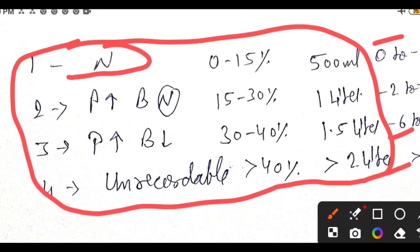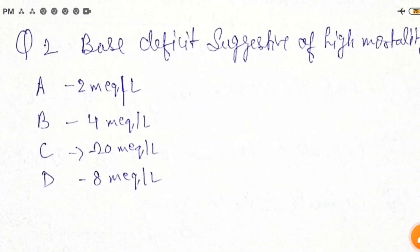Here, if BP and pulse are normal and 0 to 15% blood loss or 500 mL blood loss is considered grade 1. In grade 2, we find tachycardia, high pulse but normal BP, 15 to 30% blood loss, around 1 liter is grade 2. Grade 3, there is tachycardia and hypotension, fall in blood pressure, rise in pulse, 30 to 40% blood loss, 1.5 liters blood loss is grade 3. If BP is unrecordable and blood loss is more than 40%, around more than 2 liters, is considered grade 4. So hope this answer is clear.